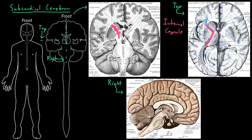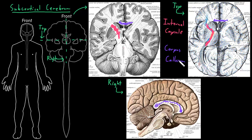Several white matter structures connect the two cerebral hemispheres. I'll just mention the biggest one, which is a big band of white matter connecting the right and the left cerebral hemisphere. You can see part of it in this top-down view as well, and when we've split the two cerebral hemispheres, it's this big band of white matter right here. This important connection is called the corpus callosum, and it allows information to travel from one cerebral hemisphere over to the other, and vice versa.